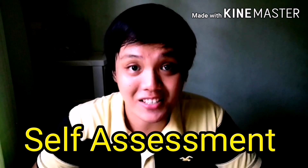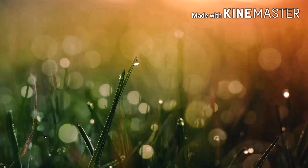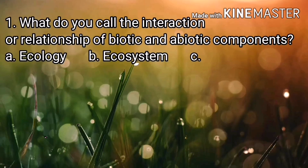At this point, get a piece of paper and a pen for our self-assessment. Write the letter of your answer. Number 1: What do you call the interaction or relationship of biotic and abiotic components? A. Ecology, B. Ecosystem, C. Population. Number 2: Which of the following is an abiotic component? A. Plant, B. Water, C. Animal.